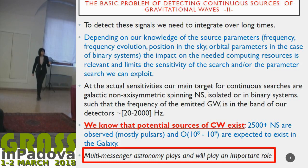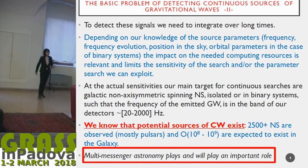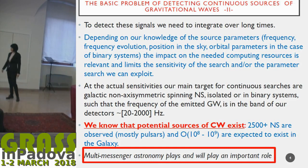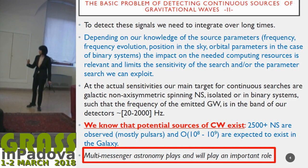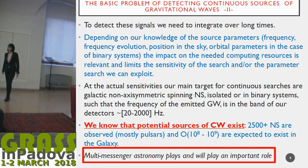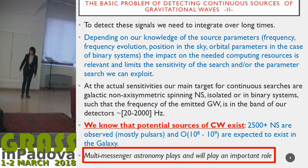We know, and this is the importance of this research, that many potential sources of this kind exist. In our galaxy, more than 2,000 neutron stars have been observed, but we know that something of the order of 1 billion exist in the galaxy but simply have not been seen from an electromagnetic point of view. Very recently, a new gamma pulsar was observed by analyzing the Fermi data using the framework called Einstein@Home.